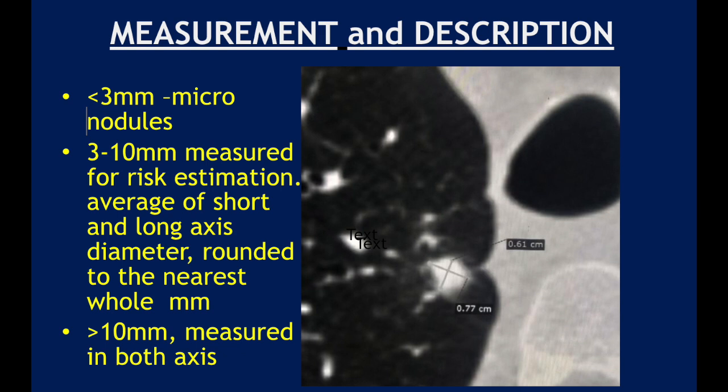3 to 10 millimeter nodules are measured for risk estimation. It is the average of short and long axis diameter, rounded to the nearest whole millimeter. For example, if the long axis is 0.77 cm and the short axis is 0.61 cm, you add the two, divide by 2 to get 6.9, and round to 7 millimeters. Any nodule more than 10 millimeters should be measured in both axes, so both measurements need to be reported.